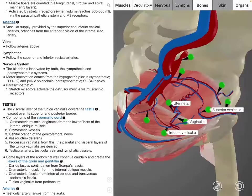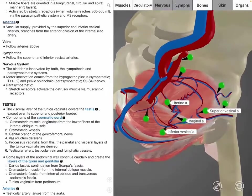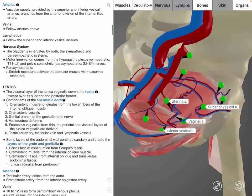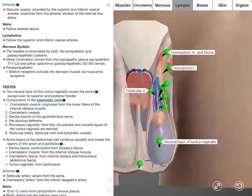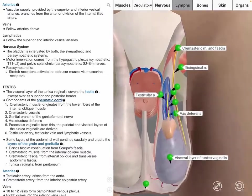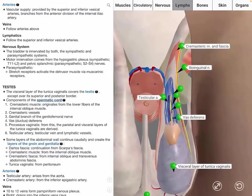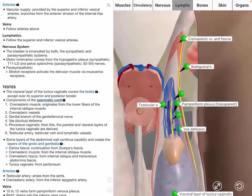When discussing the testes, the spermatic cord begins at the deep inguinal ring and ends in the testes. Its contents are extremely important to remember. It consists of the cremasteric muscle and vessels, the genital branch of the genitofemoral nerve.